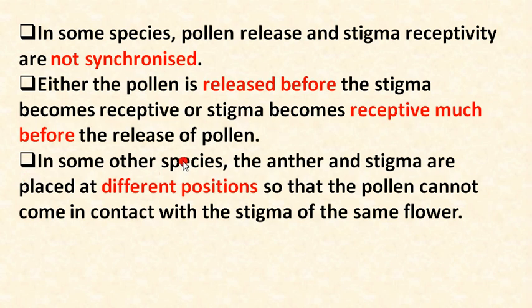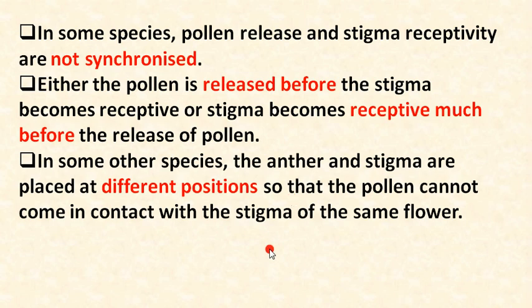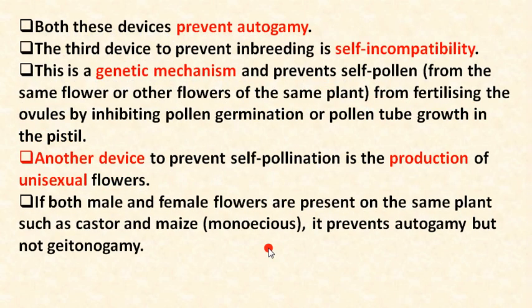In some other species, the anther and stigma are placed at different positions so that the pollen cannot come in contact with the stigma of the same flower. Both these devices prevent autogamy.